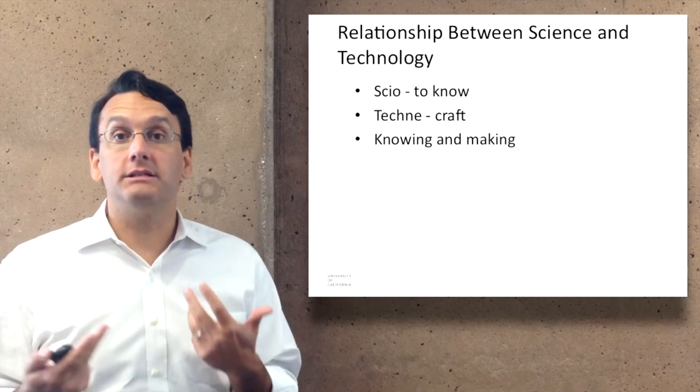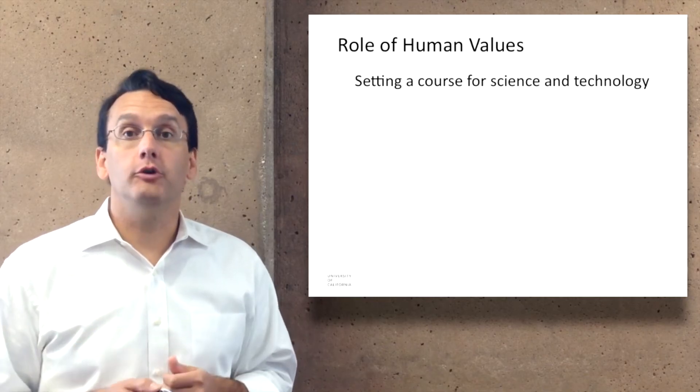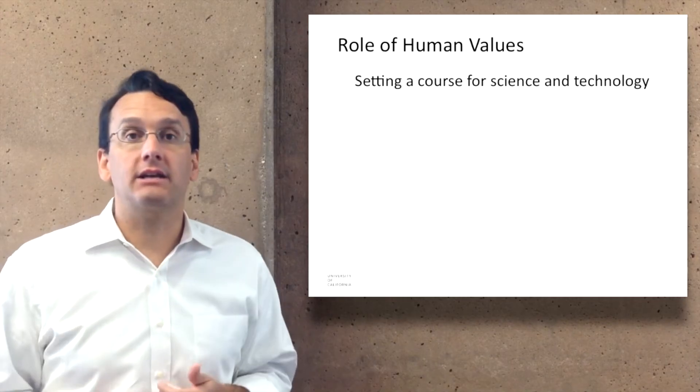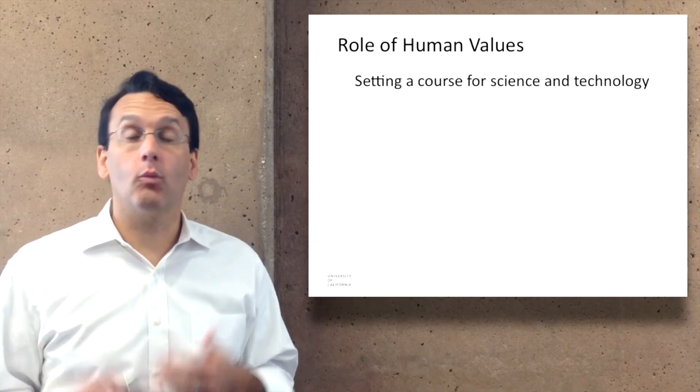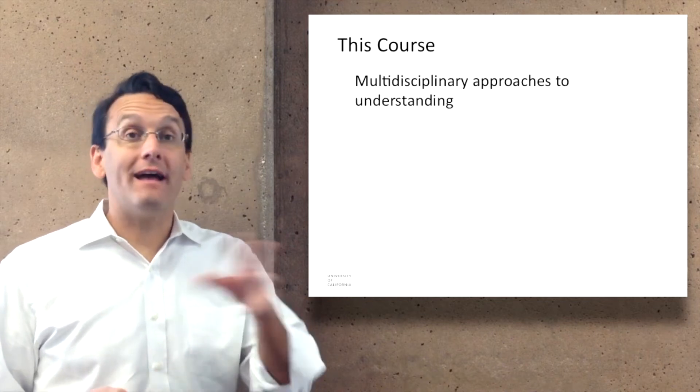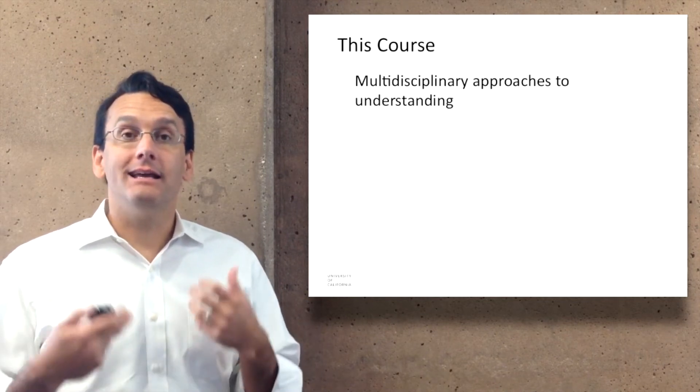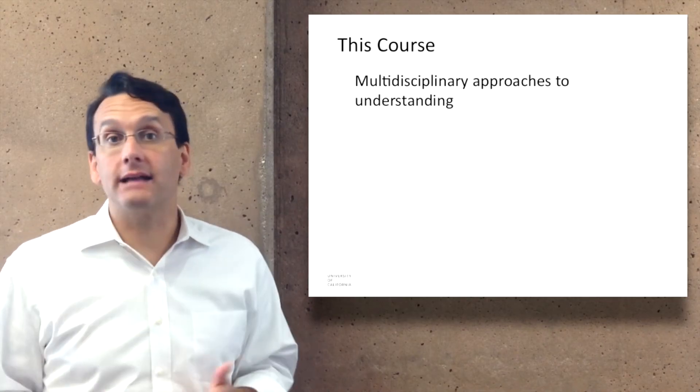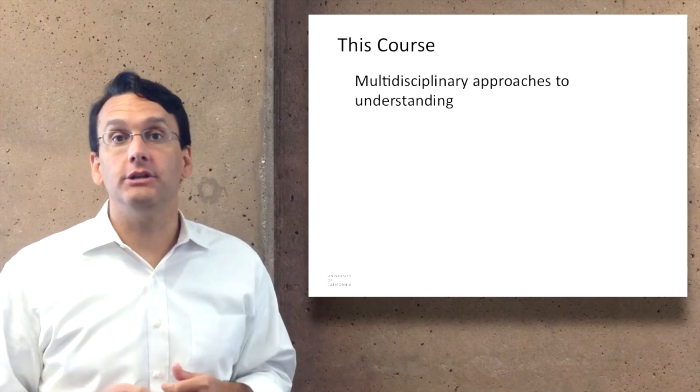Ultimately, though, with both science and technology, there's an important role for human values that sets the course for what science and technology should be exploring, what science should be learning about, and what technology should be making. That's one thing that's important to consider in the context of this class: what are the human values that we're trying to enact in the world through our science and technology efforts.